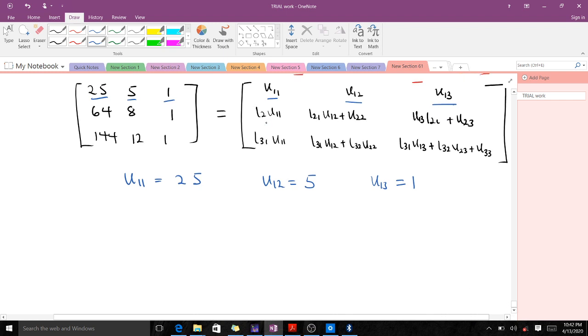When it comes here, we know L21 times U11 equals 64. We already have U11, so we can find L21. L21 would be equal to 64 over U11, which is 64 over 2.5, and this gives us 2.56. So we found 4 of them, left with 5. Don't worry, we'll get there soon. The approach is very simple.